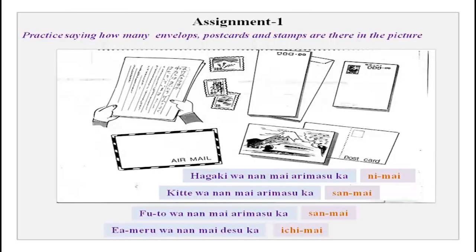Let us go over our assignments and see what you have done. The first assignment was very simple — a picture with a lot of flat objects. You can name the objects; I am sure you know this vocabulary already. You were to ask how many sheets, stamps, envelopes, postcards, and e-mails there are in the picture. I am sure you were able to do it properly.